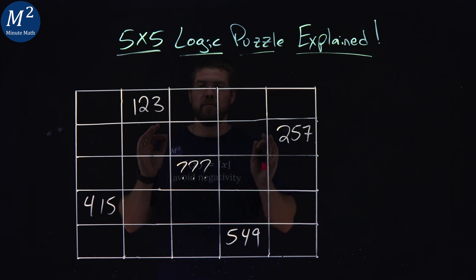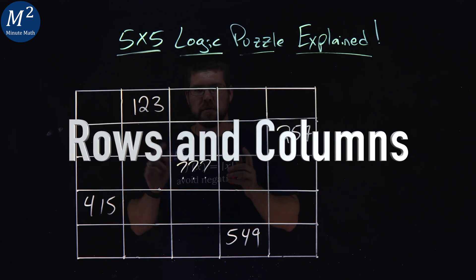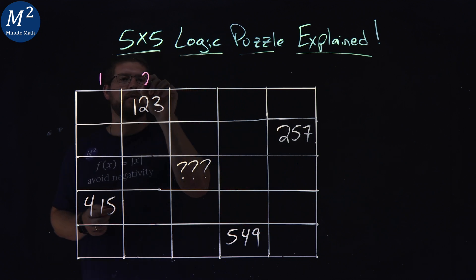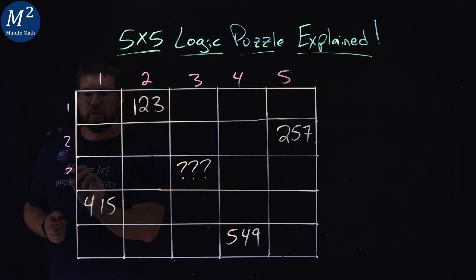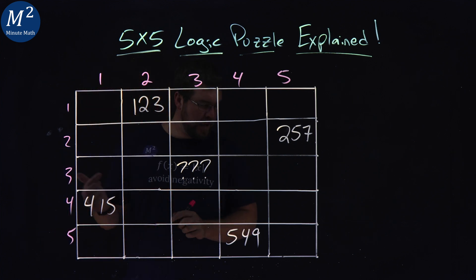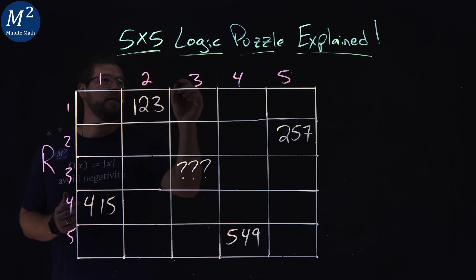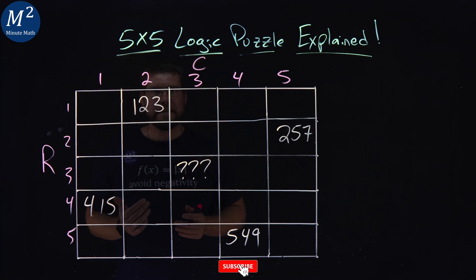The name of the game is rows and columns. Let's talk about this. 1, 2, 3, 4, 5. 1, 2, 3, 4, and 5. We have our rows that go across here and our columns that go down.